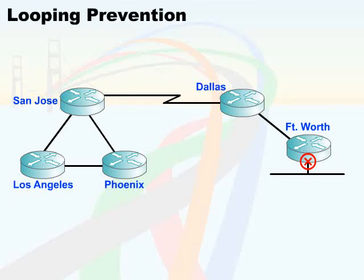What's important to understand is that this problem has been significantly minimized through the solutions invented for distance vector routing protocols. These include maximum hop count, triggered updates, split horizon, route poisoning, and hold down timers.